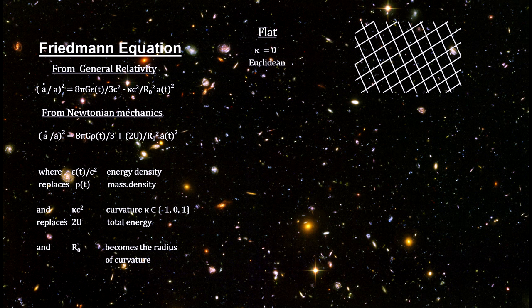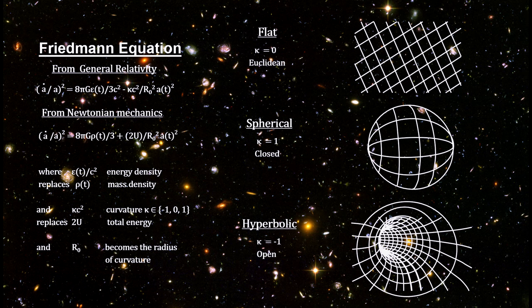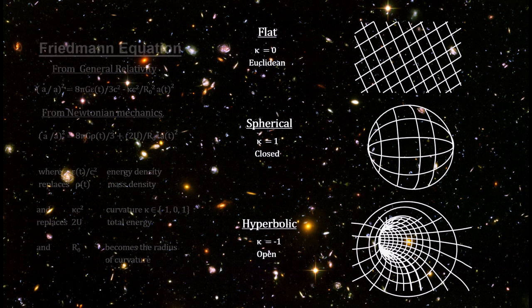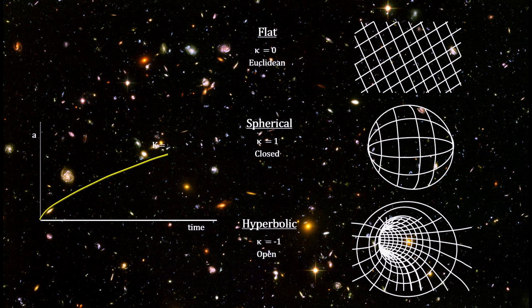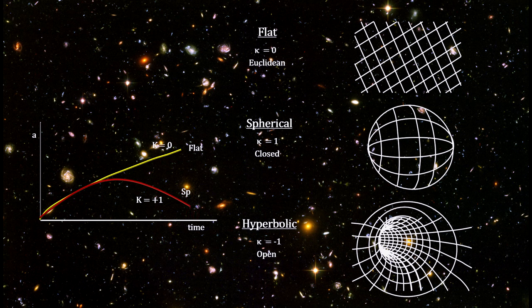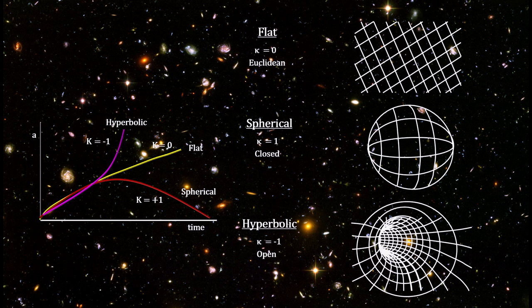For an isotropic, homogeneous universe, this says we must exist in one of these three possible universes. If it's flat, the universe will expand forever at an ever-decreasing rate. If it's spherical, it is closed and will eventually collapse back in a big crunch. And if it's hyperbolic, it is open and will expand forever at an increasing rate.